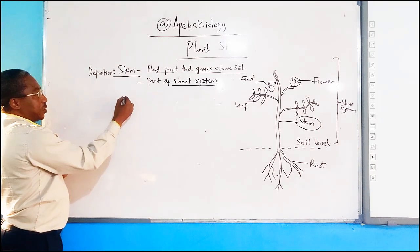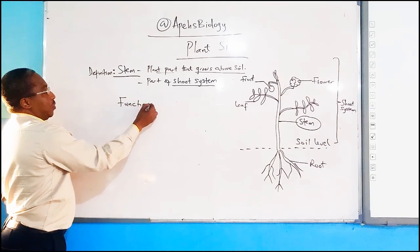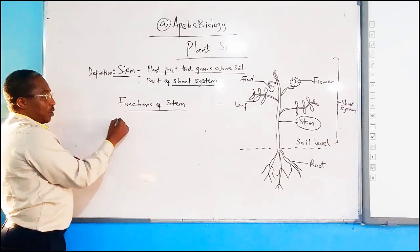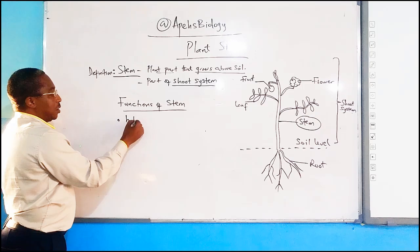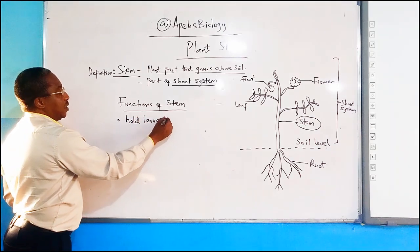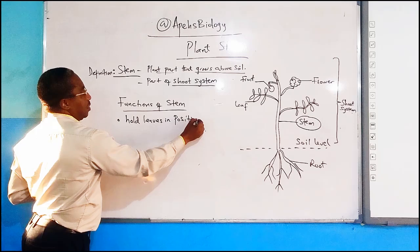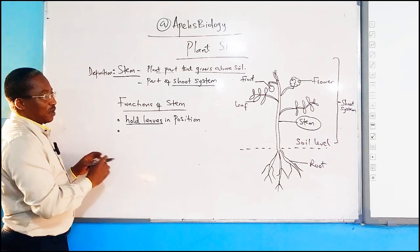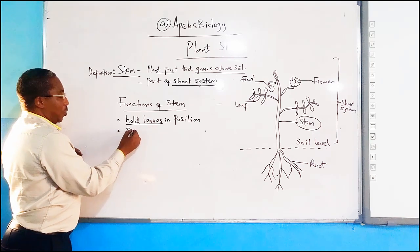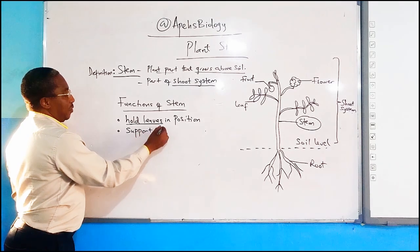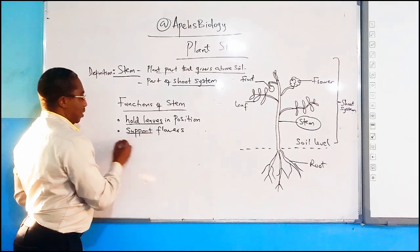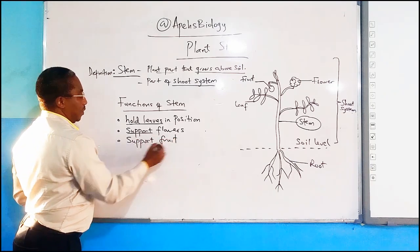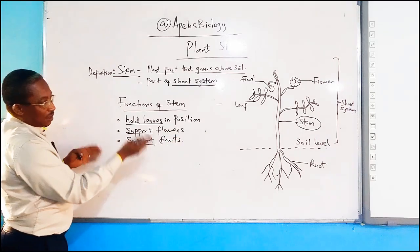From that diagram it's very easy to go straight to the functions of the stem. One of the functions is that it holds leaves in position. The second function of the stem is that it supports flowers. It can also support the fruits. These are things you find associated with the stem.